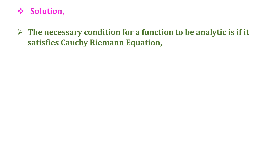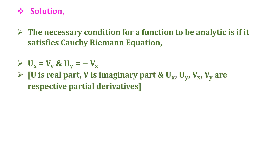The necessary condition for a function to be analytic is that it satisfies the Cauchy-Riemann equations: ux equals vy, and uy equals minus vx, where u is the real part and v is the imaginary part of the function, and ux, uy, vx, vy are the respective partial derivatives.